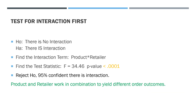When we set up the hypothesis, think of H0 and HA. H0: there is no interaction. HA: there is interaction. Our p-value was low, so we rejected H0. The product and the retailer do work in combination to yield different order outcomes.